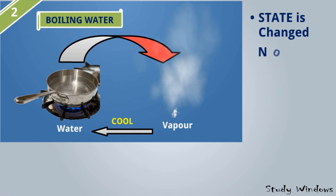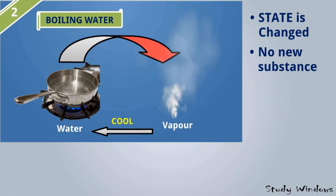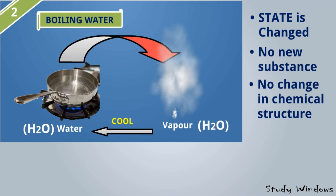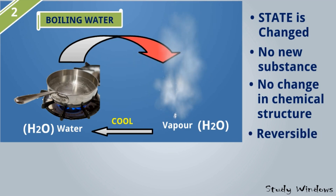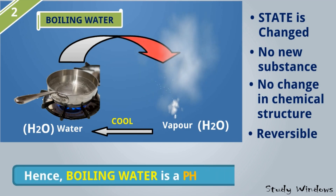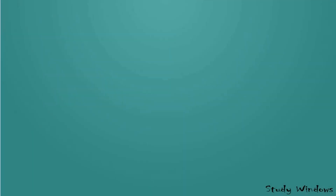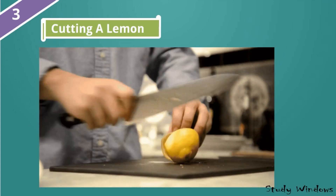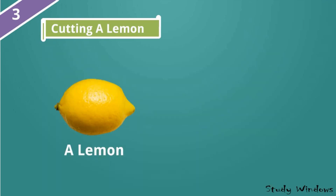No new substance is formed because water is H₂O and vapor is also H₂O. There is no change in chemical structure, and it is reversible — we can get vapor from water or water from vapor. Hence, boiling water is a physical change.